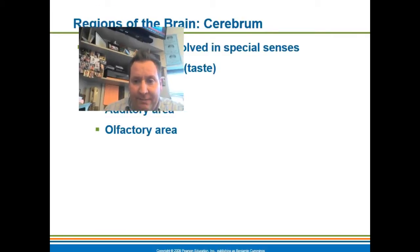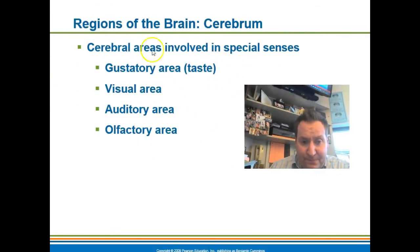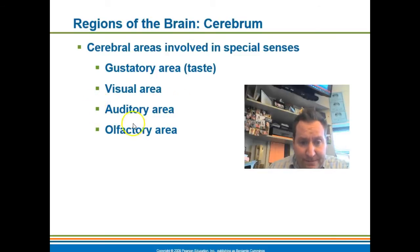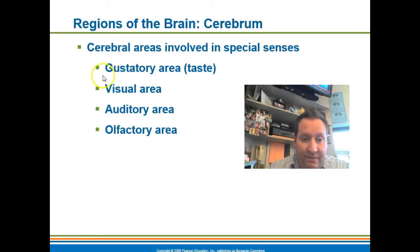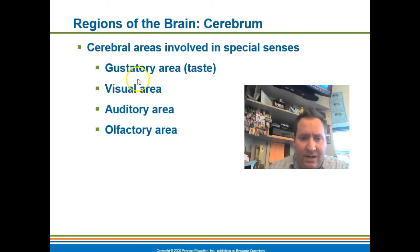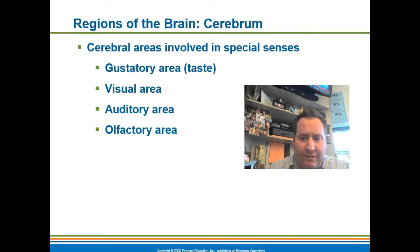Looking at the temporal lobe — the temporal lobe controls two things: it has an auditory area controlling your ability to hear, and an olfactory area which is your ability to smell. Your occipital lobe controls vision, with a visual area there. Taste is located towards the bottom of the parietal on the sensory cortex, called the gustatory area. On your test you can put temporal or parietal for taste, and I'll give you credit for either.